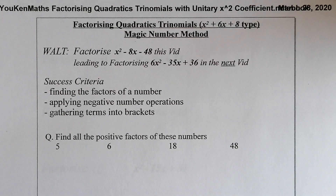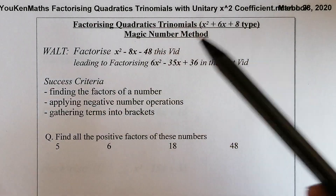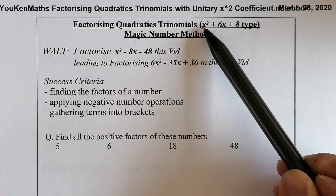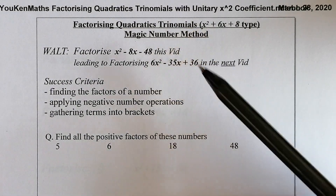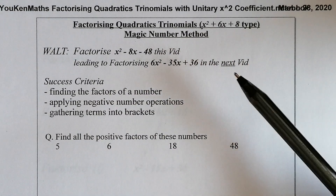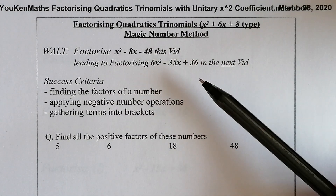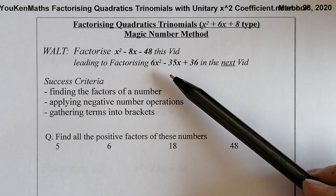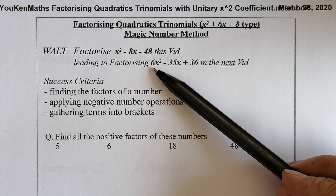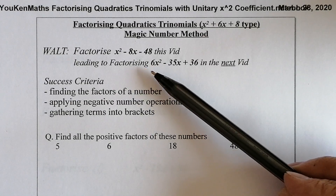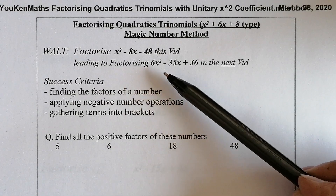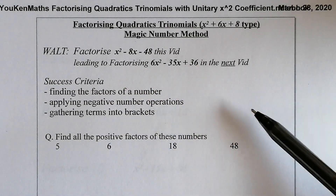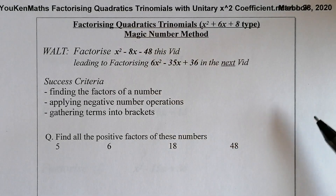Today we're learning to factorise quadratics, or trinomials as they're sometimes called, with a unitary x squared coefficient. All that means is that the number in front of x squared is a 1 for this video. I'll create another video dealing with the more difficult type where the coefficient of x squared is greater than 1, using the magic number method.